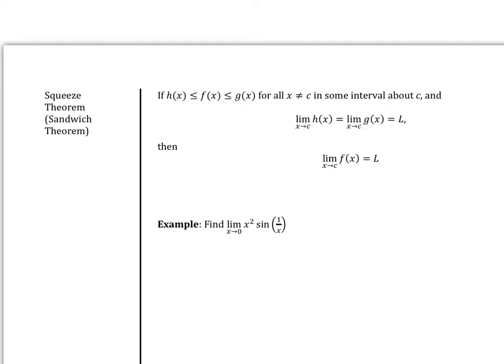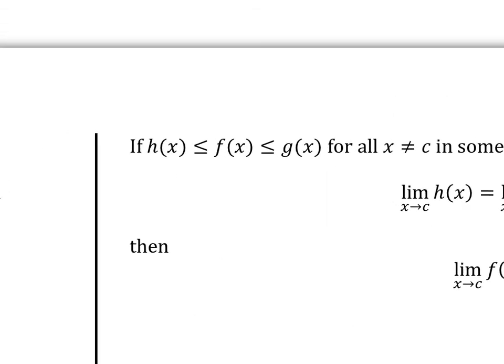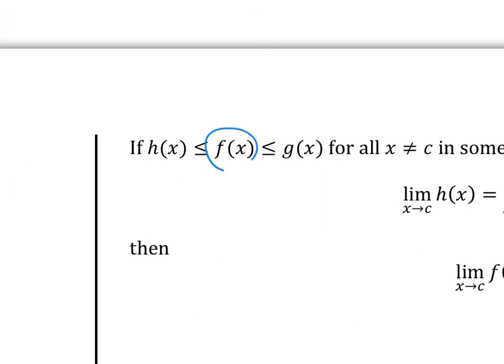Now that you have a little more experience with how to find limits analytically by doing some algebra, we're going to look at a special case where a limit is a little bit hard to find. What we're going to do is try to put it between functions that we know, so that we can find the actual limit. For example, let's say that you have this function f and it is between h and g.